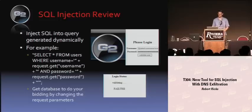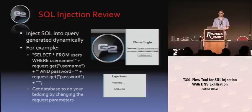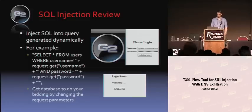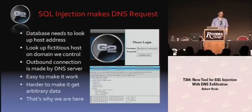In this example, we have a query like 'select star from users', and you just pull it right out of the request object. So what you can do is insert code in there and make the database do all sorts of fun stuff for you — for example, you can make the database server make DNS requests.